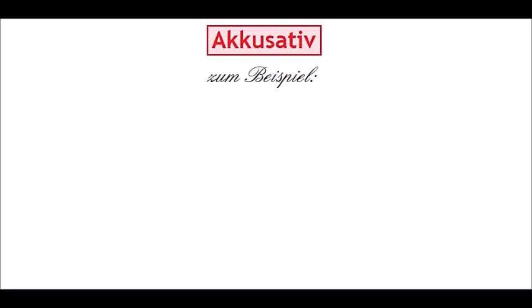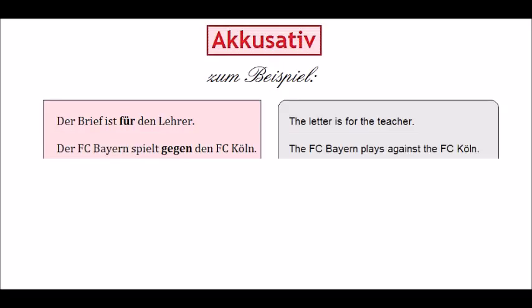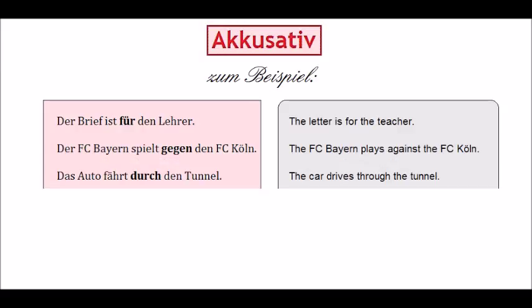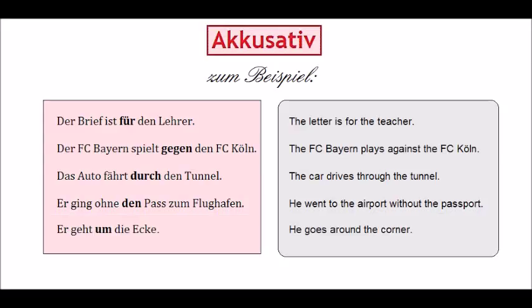Let's look at some examples. 'Der Brief ist für den Lehrer' — the letter is for the teacher. 'Der FC Bayern spielt gegen den FC Köln' — FC Bayern plays against FC Köln. 'Das Auto fährt durch den Tunnel' — the car drives through the tunnel. 'Er ging ohne den Pass zum Flughafen' — he went to the airport without the passport. 'Er geht um die Ecke' — he goes around the corner.